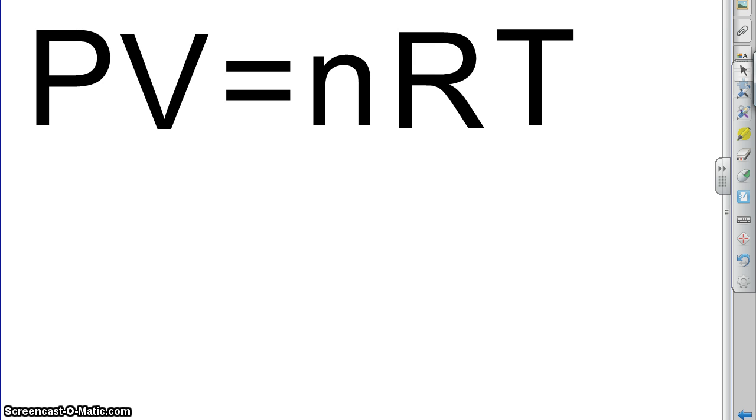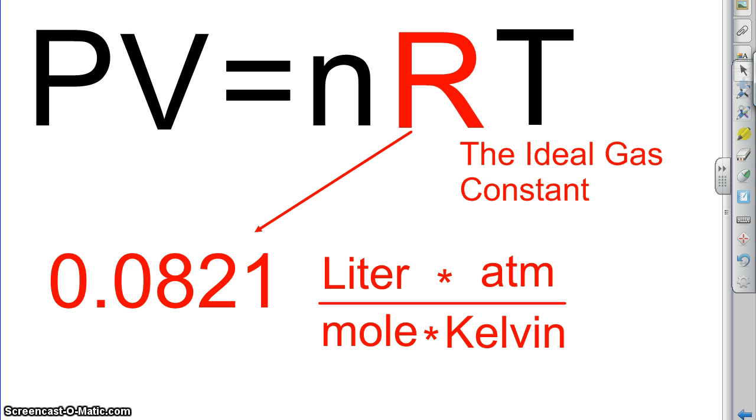So, let's go through the formula and talk about each different part, what it is, and what the units are. We'll actually start with R. R is known as the Ideal Gas Constant.